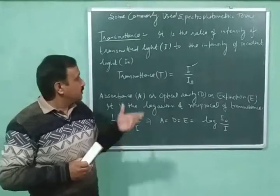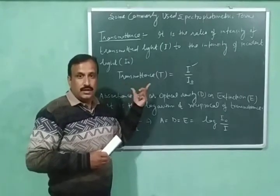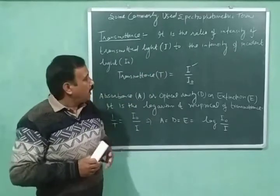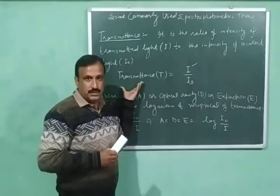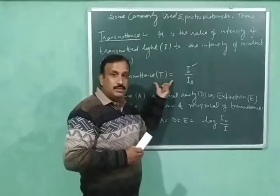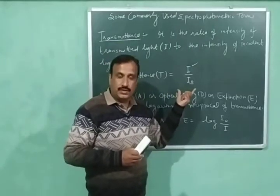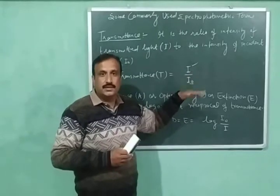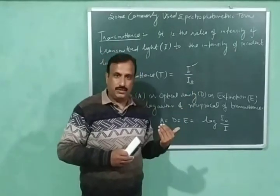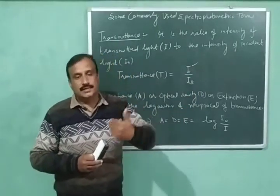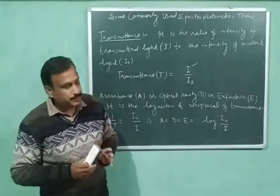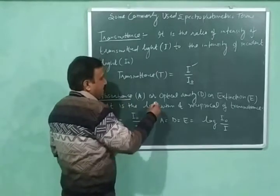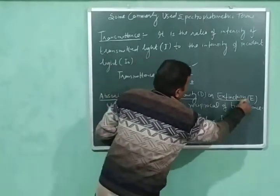This term is very useful in UV and visible spectroscopy. The units of transmittance: transmittance is a dimensionless quantity because it is the ratio of two quantities of the same kind — intensity in the numerator and intensity in the denominator — so the units cancel each other. Now let's discuss absorbance, which is also called optical density or extinction.